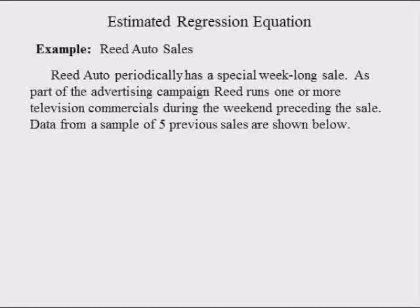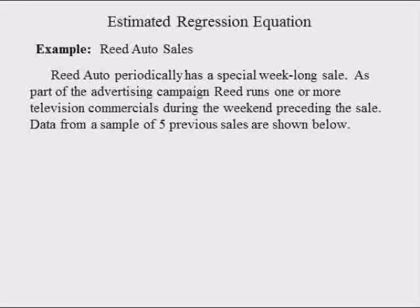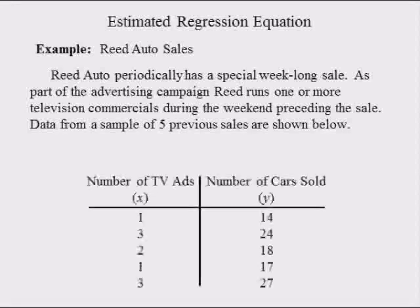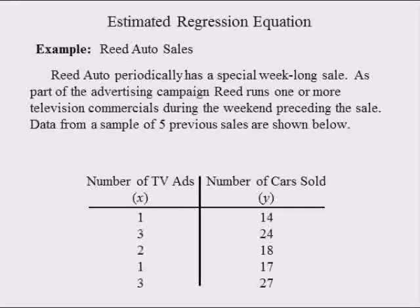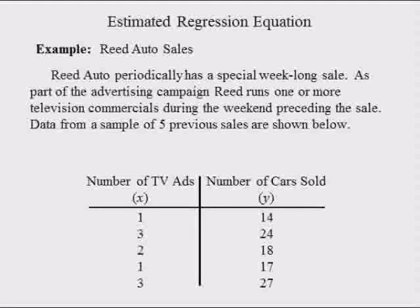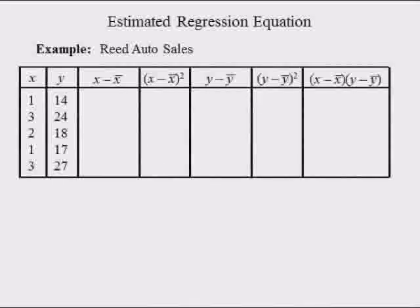In the example, Reed Auto periodically has a special week-long sale. As part of the advertising campaign, Reed runs one or more television commercials during the weekend preceding the sale. Data from a sample of five previous sales are shown below. When Reed Auto ran one television ad, it sold 14 and 17 cars. When it ran two television ads, it sold 18 cars. When it ran three television ads, it sold 24 and 27 cars. The variable X is the number of TV ads, while the variable Y is the number of cars sold.